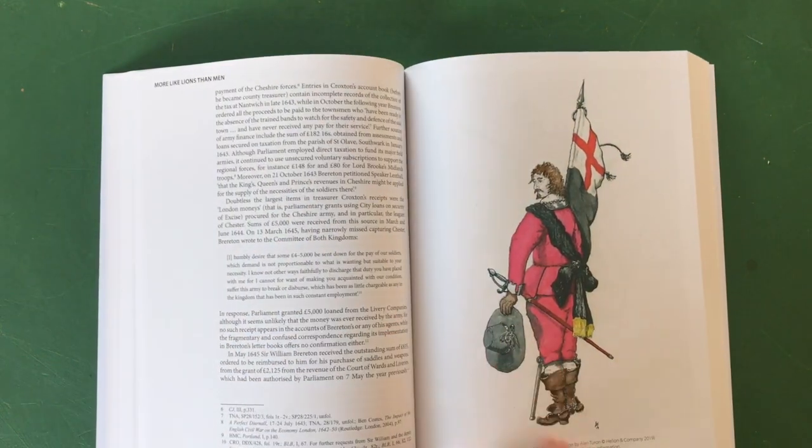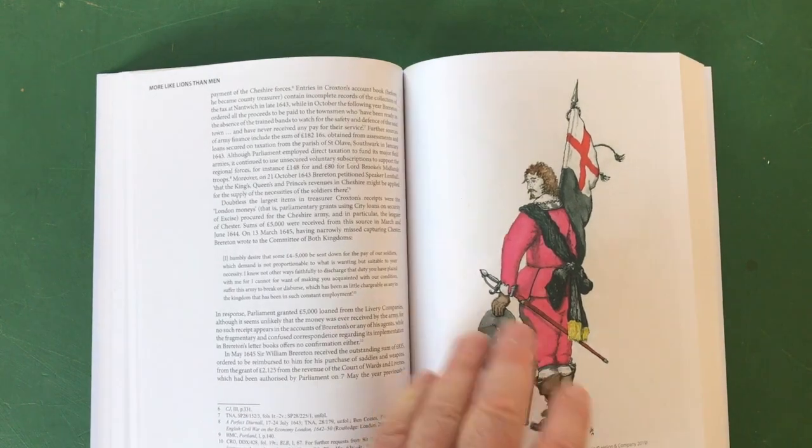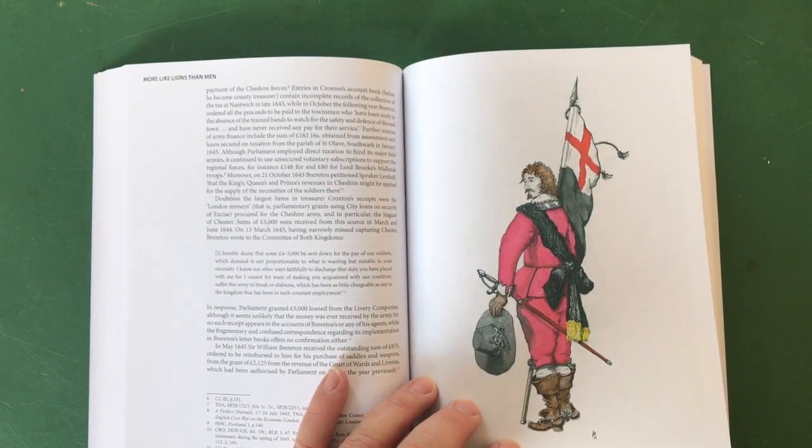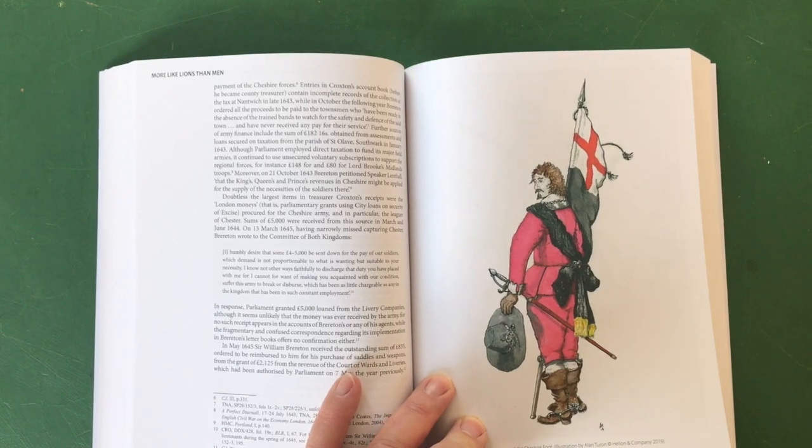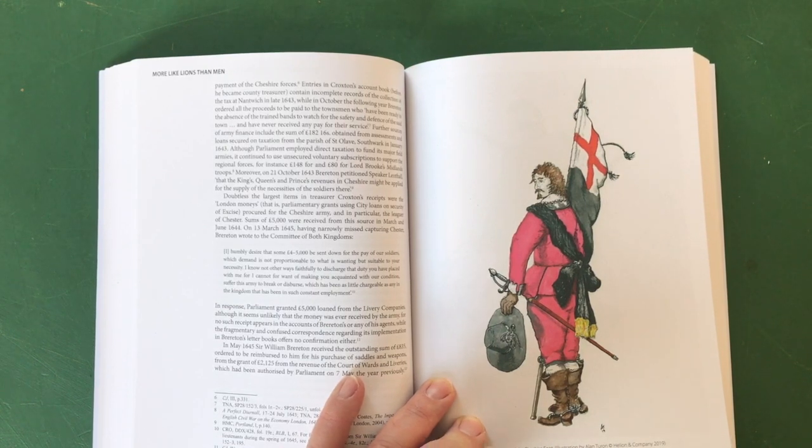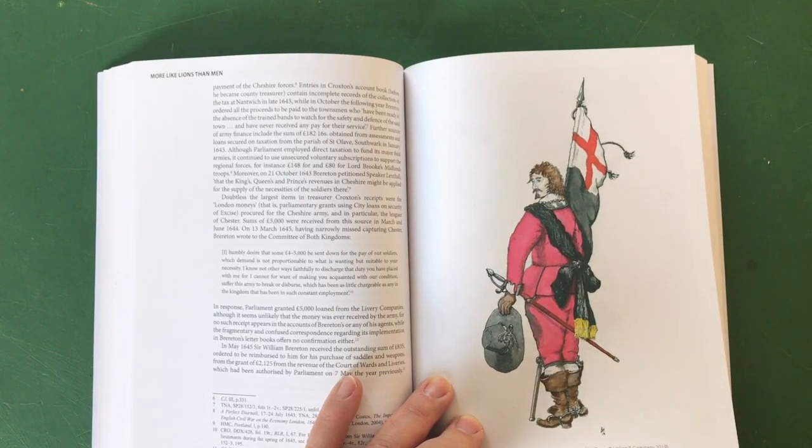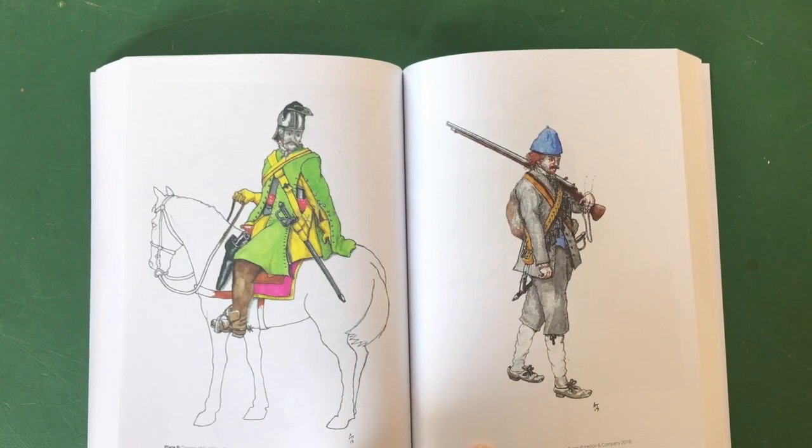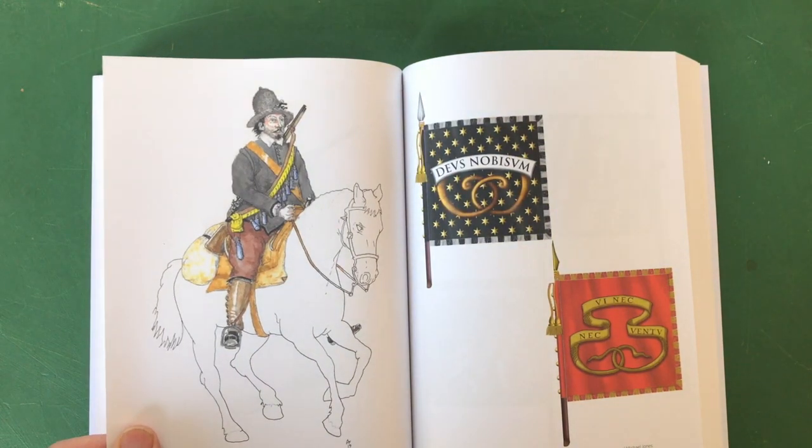And this is also where we start to see some illustrations by Alan Turton. Yeah they're quaint. I would say the quality - we're not talking about an Osprey standards here, this is not Peter Dennis illustrating this. But nonetheless they convey something about the forces and the costumes and they're rather characterful I would say. I quite like them. Not bad actually, they convey what, you know, as wargamers we need to know.